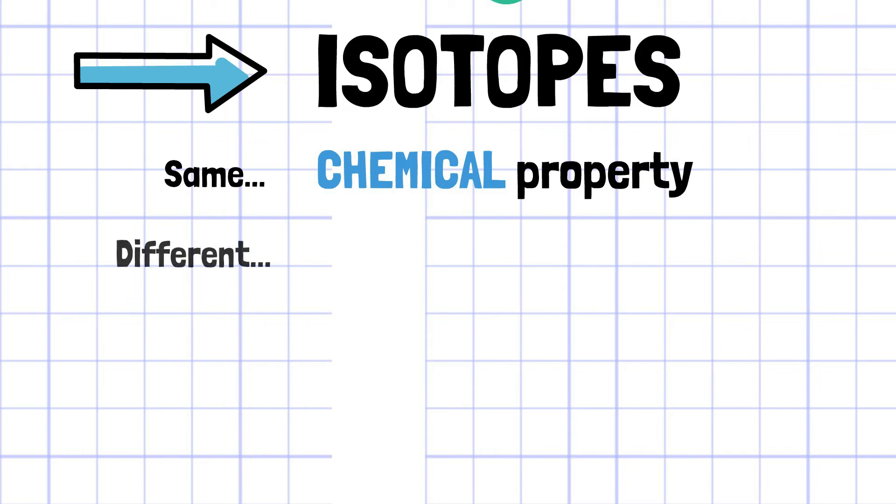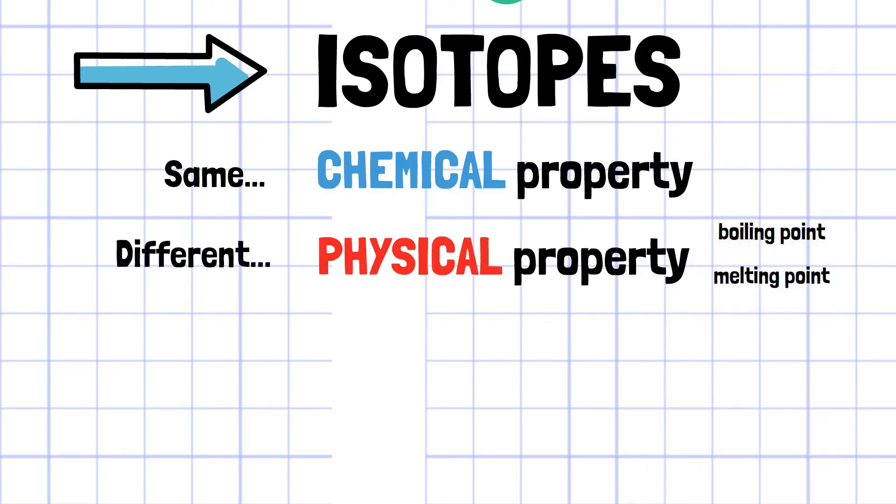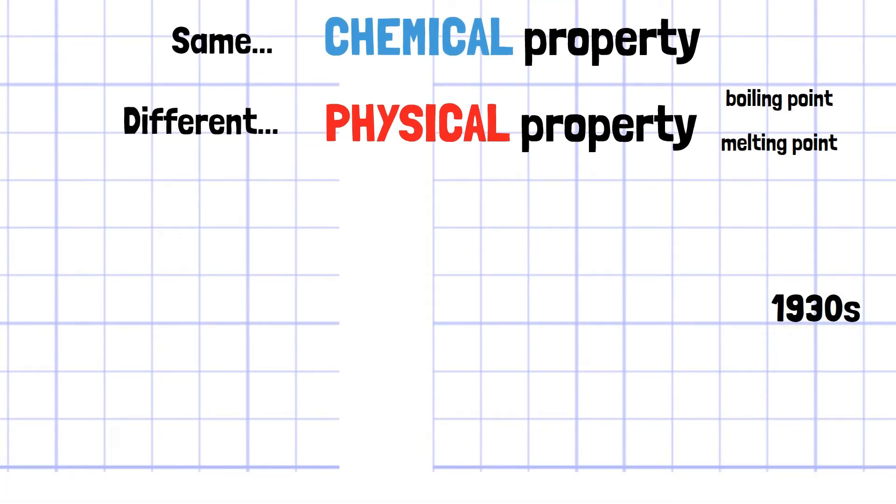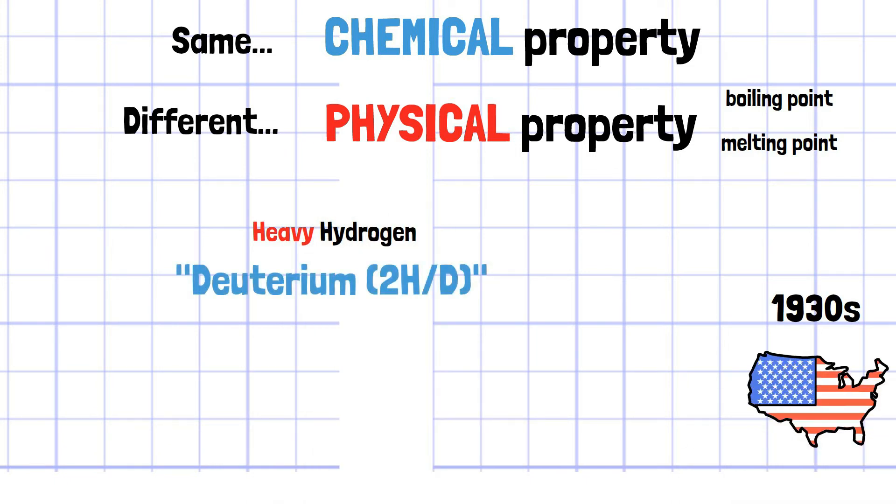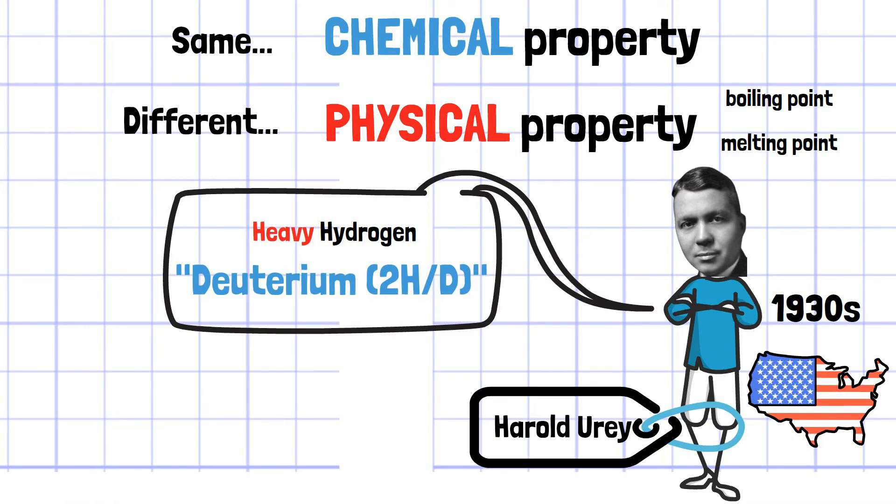Isotopes share similar chemical properties, but their physical properties such as boiling point and melting point are different. The research on isotopes greatly advanced in the 1930s from the discovery of heavy hydrogen deuterium by American chemist Harold Urey, who was awarded a Nobel Prize afterwards.